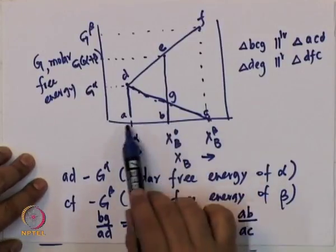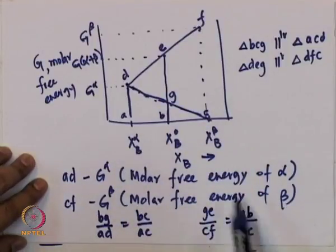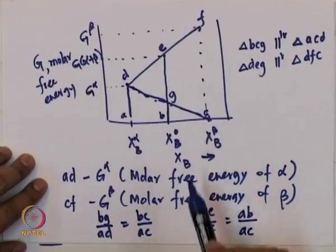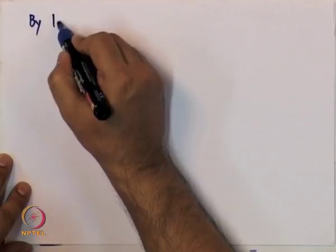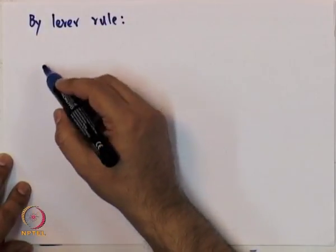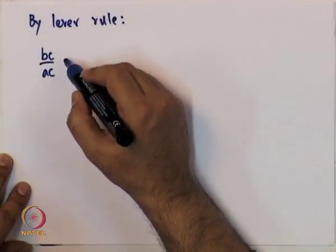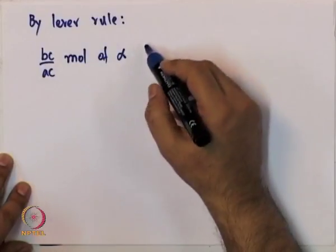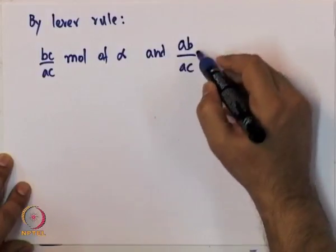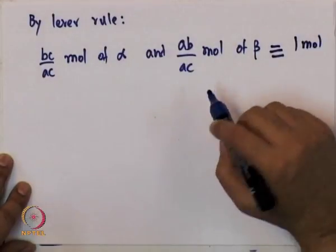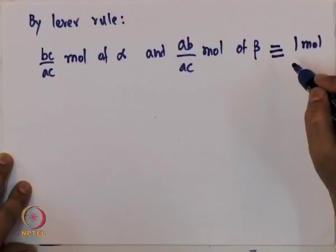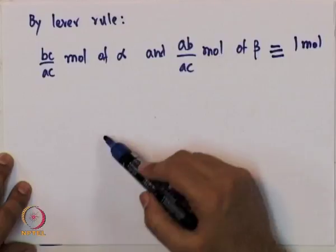BC/AC gives the amount of alpha and AB/AC gives the amount of beta — that is by the lever rule. By lever rule, BC/AC moles of alpha plus AB/AC moles of beta equals 1 mole. So if you take 1 mole of material with overall alloy composition x_B naught, it is BC/AC moles of alpha and AB/AC moles of beta.